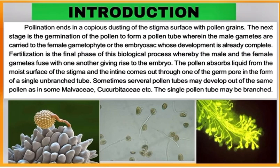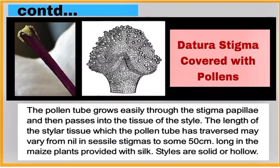Write Introduction: After pollination, pollen grains start germinating on stigma and form a pollen tube. From the stigma, the pollen tube passes into the tissue of the style. The length of the style varies from nil, as in sessile stigmas, to 50 cm long, as in maize flower.